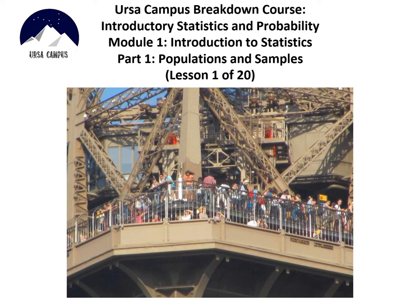Hello and welcome to an IHRSA campus breakdown course on introductory statistics and probability. This is a set of 20 lessons meant to provide you with a clear and meaningful explanation of all of the principal topics in any introductory statistics or probability course. The course is divided into five modules, and this is the very first lesson in the course: Module One, Introduction to Statistics, Part One — Populations and Samples.